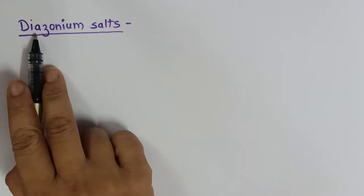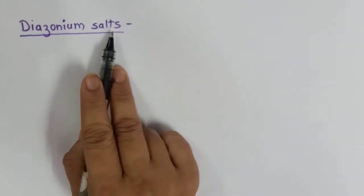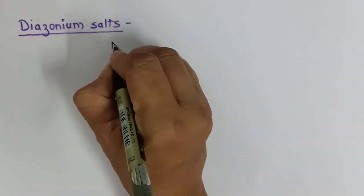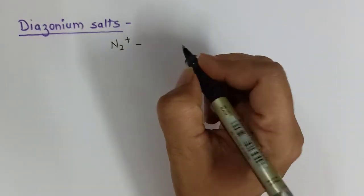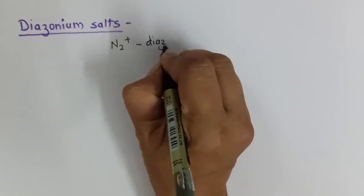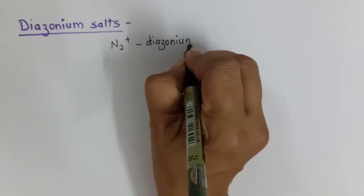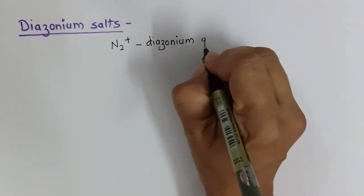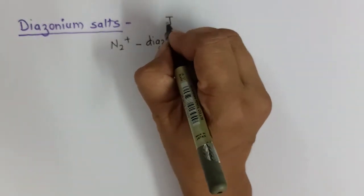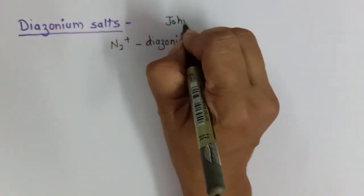Hello students, welcome to the last part of the chapter amines — that is diazonium salts. The name diazonium salts comes because of the presence of the N2+ group, which is known as the diazonium group. These diazonium salts were discovered by John Peter Grace.